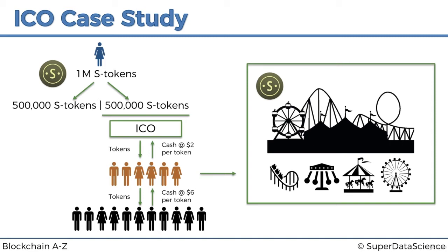These new buyers will either keep the tokens for investment and speculative purposes to sell off one day, or they're genuinely interested in visiting the theme park. They'll go and spend those tokens on rides and maybe products sold in the park — paying with S tokens for the rides. That's how this whole system works.